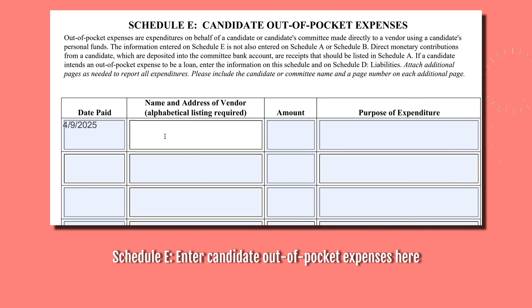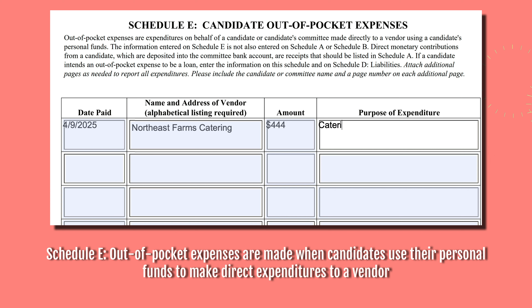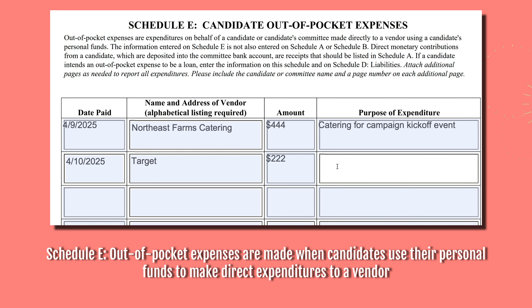Schedule E is where you enter candidate out-of-pocket expenses. Out-of-pocket expenses are made when candidates use their personal funds to make direct expenditures to a vendor.